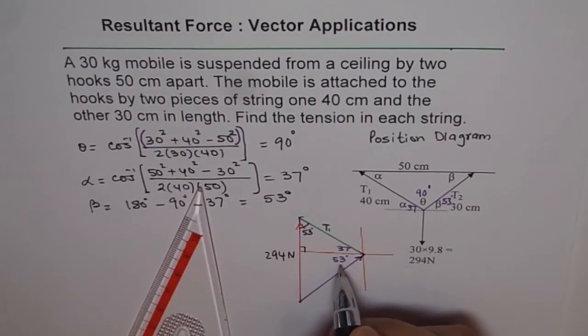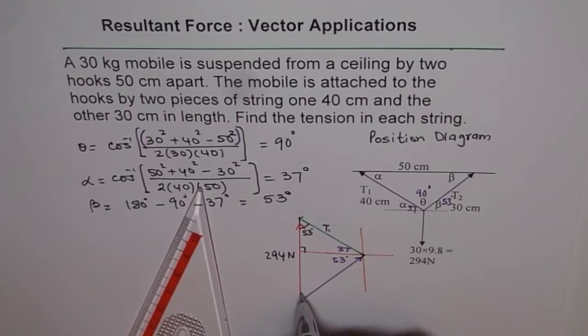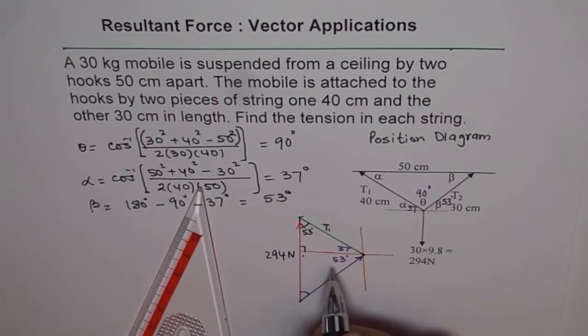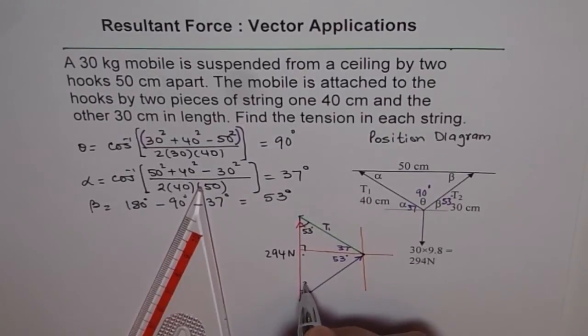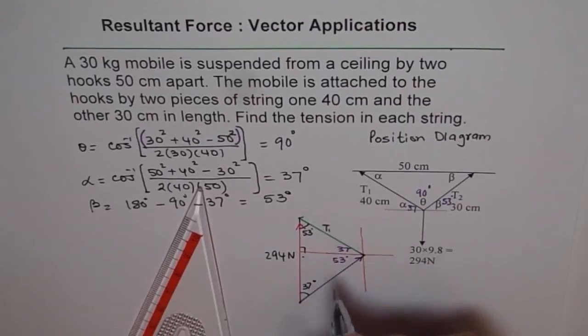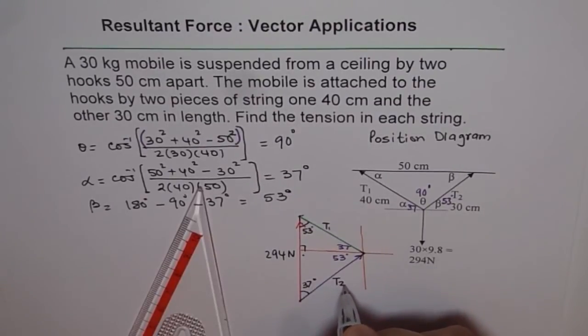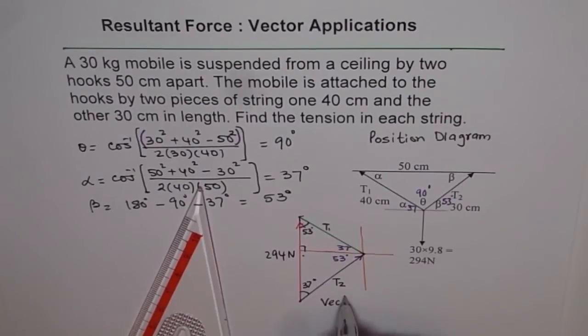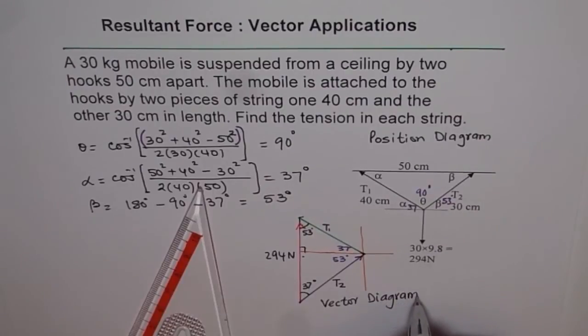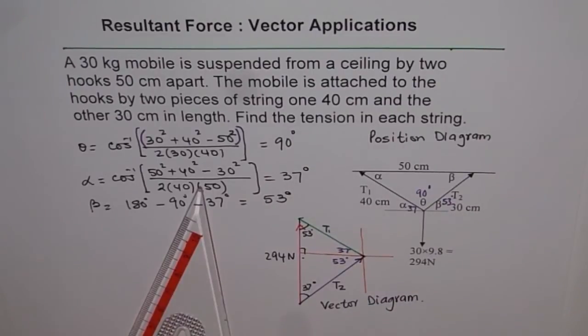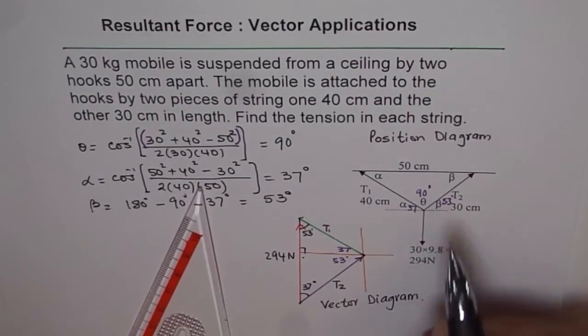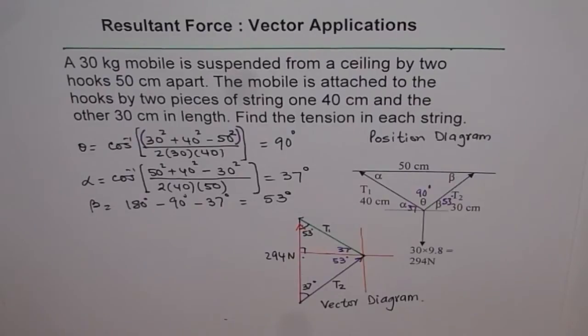If it is 90 degrees, then what is this angle? This angle is 90 minus 37, which is 53. In our case we are getting the same angle. This angle is 90 minus 53, that is 37 degrees. That is T1 and this is T2. We call this vector diagram.